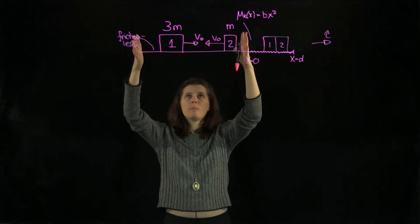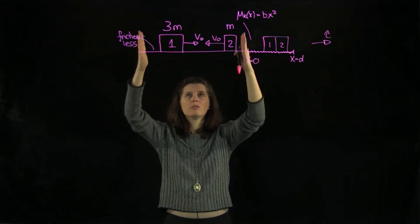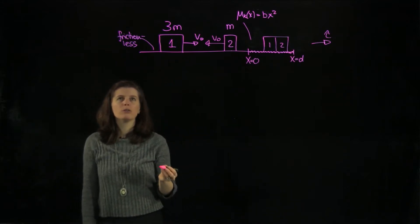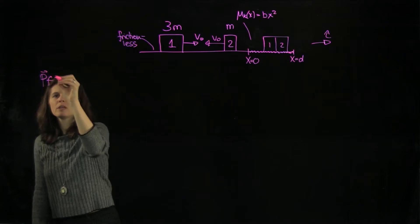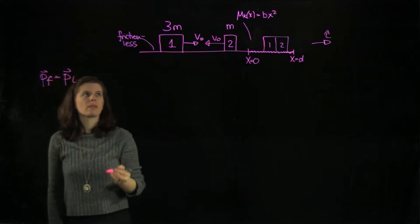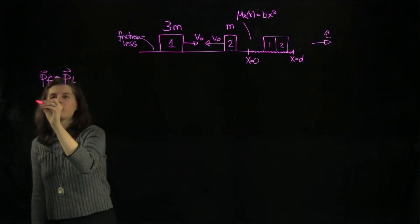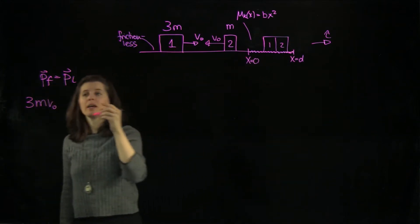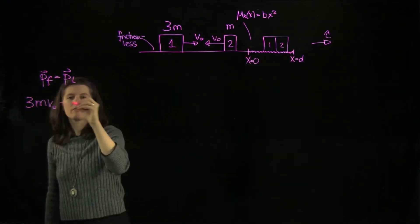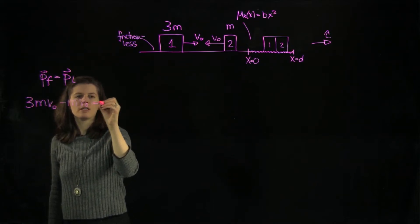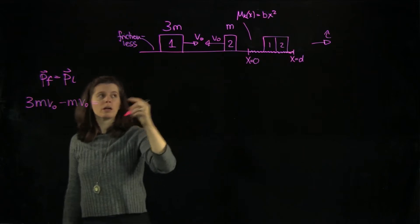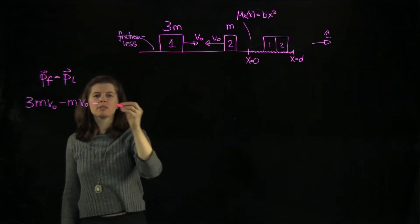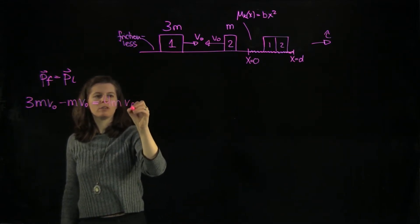Up to this point, before x equals 0, there is no external force acting on the system. So conservation of momentum holds, which means p_final equals p_initial. We're going to have 3m·v0 — that block goes in the positive i-hat direction, block two goes the opposite way, so we subtract m·v0. When they're stuck together on the frictionless surface, we have 4m·v_final.